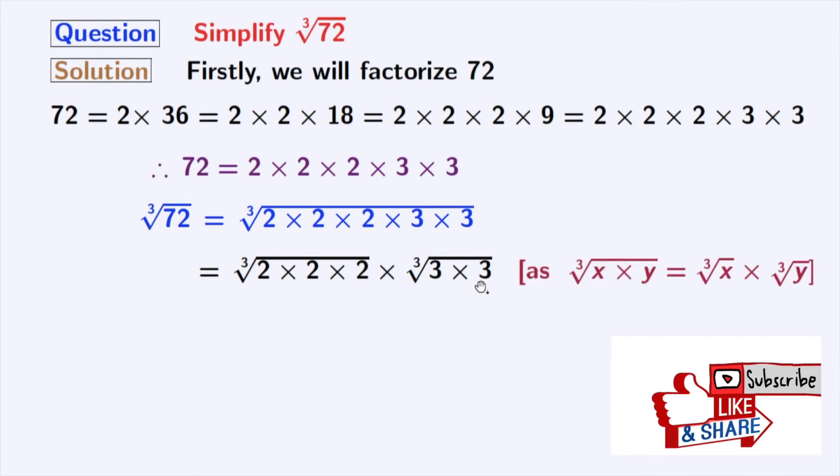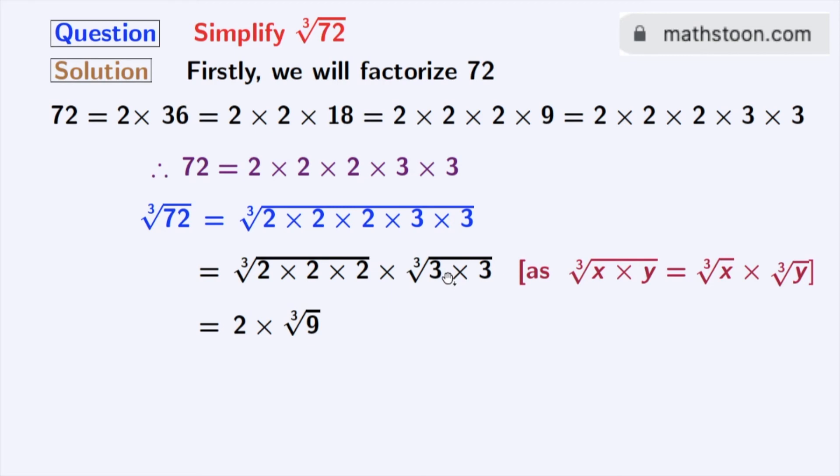As we know that cube root of x times y is equal to cube root of x times cube root of y. Here x is 2 times 2 times 2 and y is 3 times 3. Now from the first cube root we get 2 and from the second cube root we get cube root of 9.